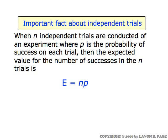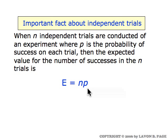Expected value becomes particularly simple when you think about it in the context of an independent trials experiment. If you're doing n independent trials and p is your success probability, then the expected value for the number of successes in n trials is simply the number of trials times the success probability. To motivate this, think about tossing a coin four times and counting the number of heads. If n is four and the probability of heads on any given toss is one half, four times a half is two. So it should seem quite intuitively natural that in four coin tosses the expected value for the number of heads would be two.